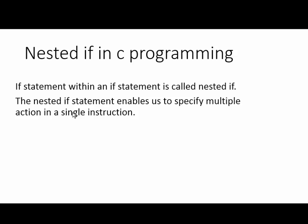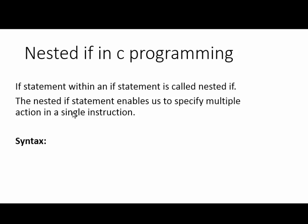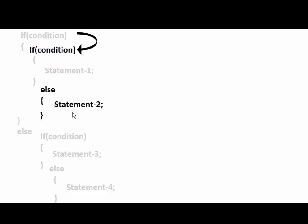Syntax: if condition — if this condition is true, then control will be passed to a second nested if. If this condition is also true, then statement one will be executed. But if condition one is true and condition two is false, then control will be passed to the else part of the second if, and statement two will be executed.